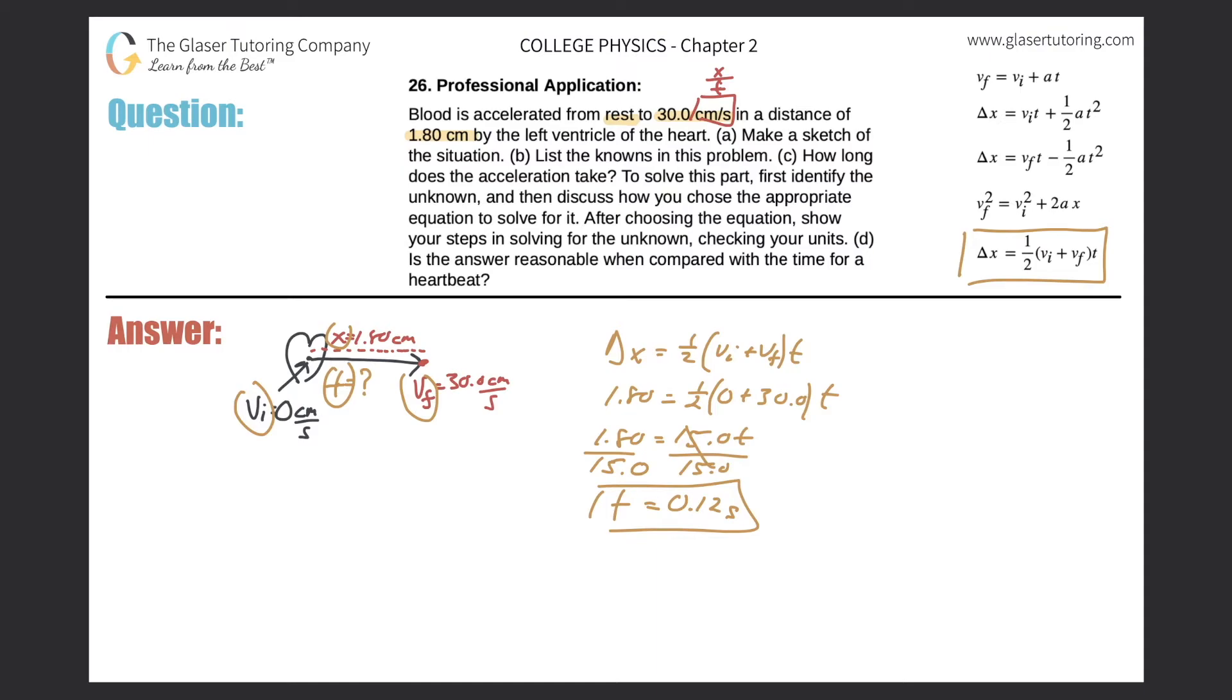I know that because the seconds value was given to me in the velocity. So that's going to be the time it takes for blood to be accelerated from 0 centimeters per second to 30 centimeters per second. So now we found out how long the acceleration takes. Now, that's letter C. Let's take a look at letter D. So now it says, is the answer reasonable when compared to the time for a heartbeat? So let's just take a, what would you say the average heartbeat is of a person?